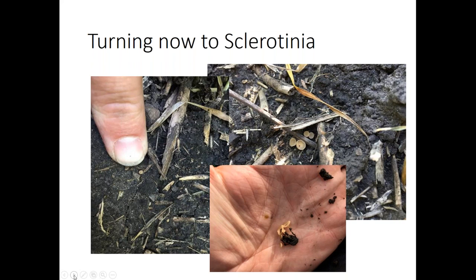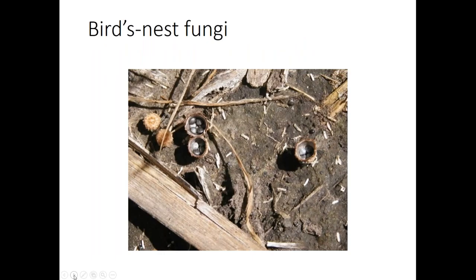Only resting structures within one or two centimeters of the soil surface have a chance of germinating and producing spores. Most of the province has not had conditions that favor the soil surface being that wet for that length of time. There are some reports of people seeing apothecia in the Morden area. If you're scouting, be aware of a look-alike called the bird's nest fungus — before the structures open you might mistake them for apothecia, but once opened they have little egg-shaped spore packets inside and are actually a benign fungus found on canola stubble.